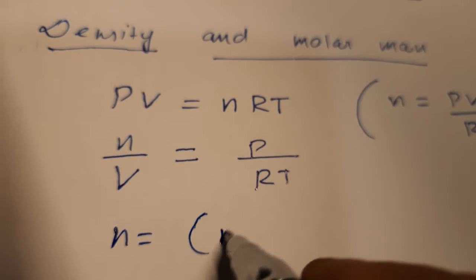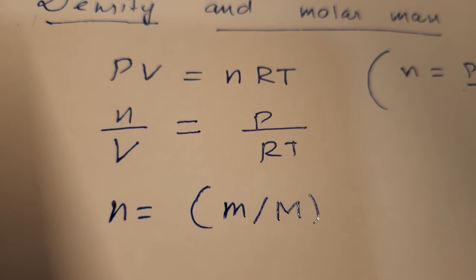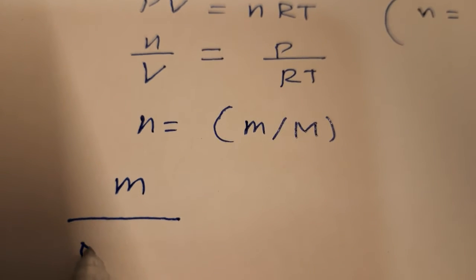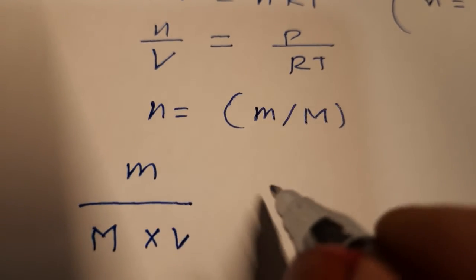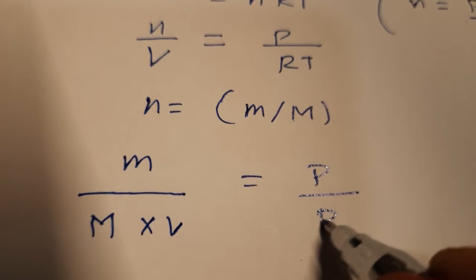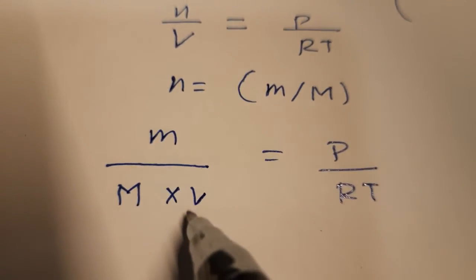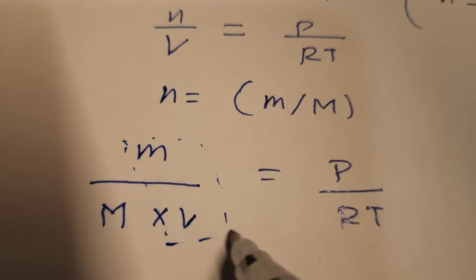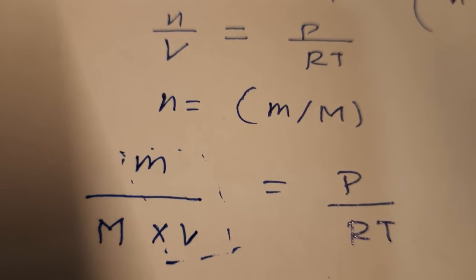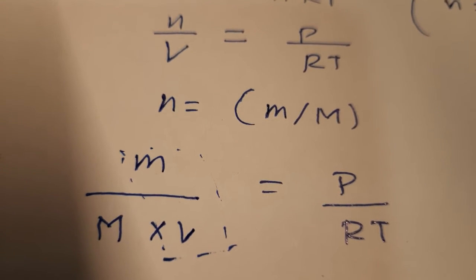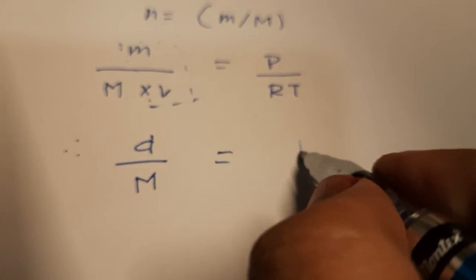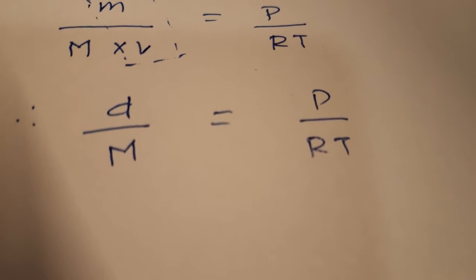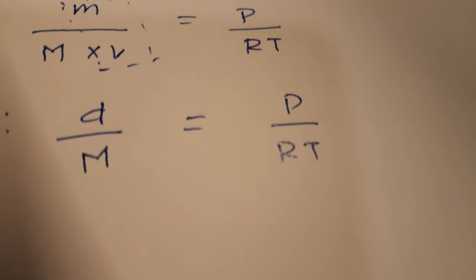Now, n means small m upon capital M. So we write m upon M into V is equal to P upon RT. Since m upon V means density, we can write d upon capital M is equal to P upon RT.